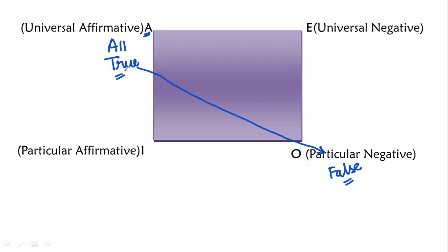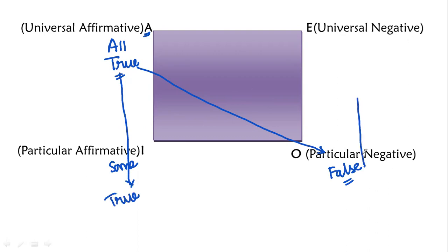Look at the second rule. If you have a type of true, the sum will also become true. If this is true, definitely this will also be true. If this is false, this will also be false.